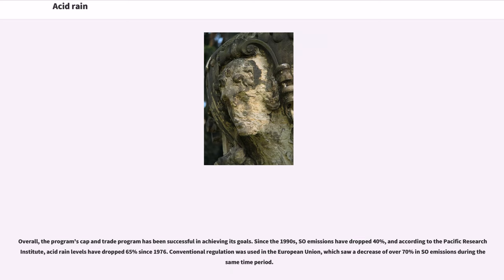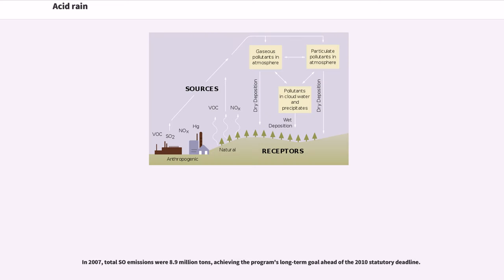Overall, the program's cap-and-trade program has been successful in achieving its goals. Since the 1990s, SO2 emissions have dropped 40%, and according to the Pacific Research Institute, acid rain levels have dropped 65% since 1976. Conventional regulation was used in the European Union, which saw a decrease of over 70% in SO2 emissions during the same time period. In 2007, total SO2 emissions were 8.9 million tons, achieving the program's long-term goal ahead of the 2010 statutory deadline.